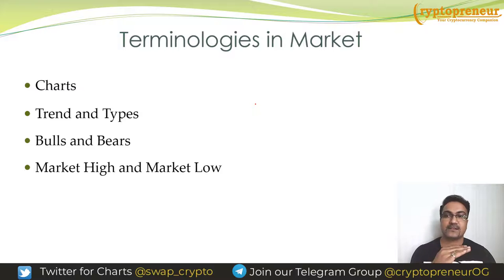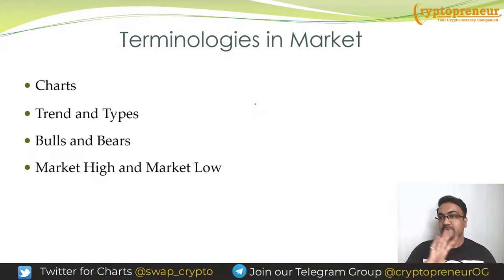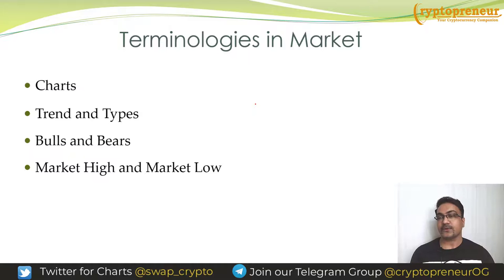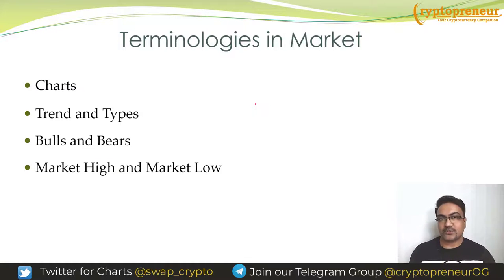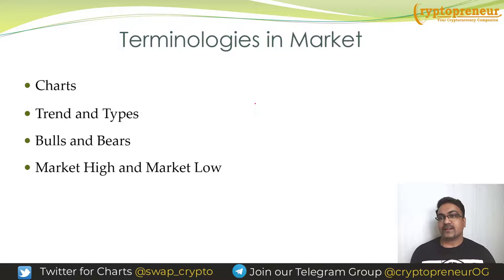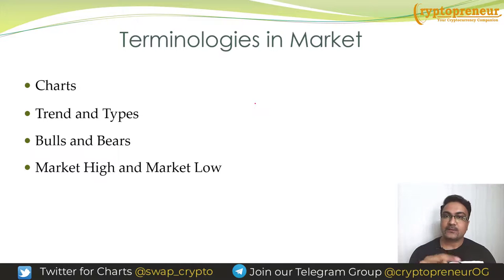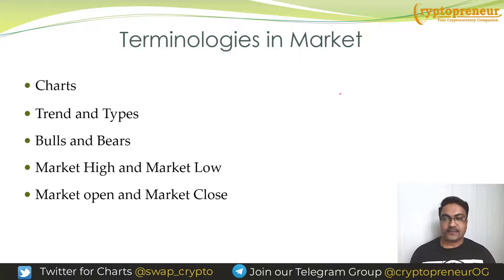Market high and market low — you must have seen that Bitcoin's price went from $4,000 to $65,000. The highest point the price reached is called the market high, and it can be observed on any time frame such as weekly or monthly. The market low is the opposite — the bottom price where the market took support, the lowest point. For example, today's high is the highest price of today's candle, and today's low is the lowest price. These apply to any time frame.